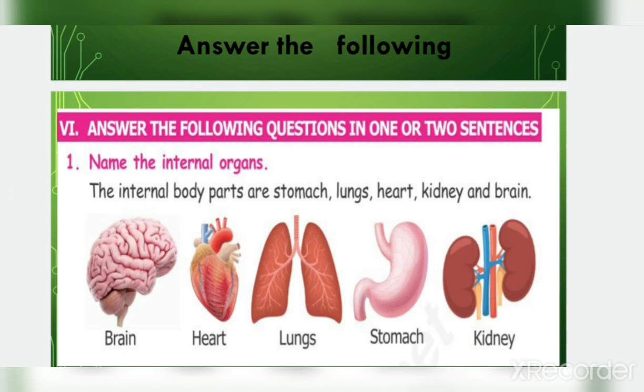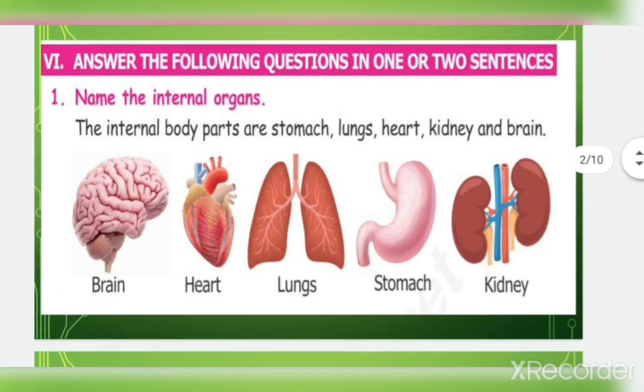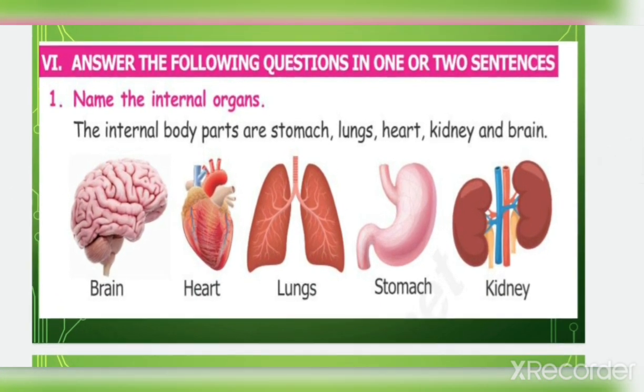Answer the following questions in one or two sentences. First one: name the internal organs. The internal body parts are stomach, lungs, heart, kidney, and brain. I have given the pictures also here, children — brain, heart, lungs, stomach, kidney. You have to mention the names of the internal organs; you need not draw the diagrams.